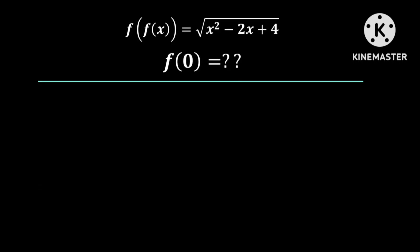Hello guys, you are once more welcome to this channel. In this lesson, we are given that f composed with itself is equal to the square root of x squared minus 2x plus 4, and we need to find f of 0. We know that f of f of 0 is equal to the square root of 0 minus 0 plus 4, and this is equal to 2.